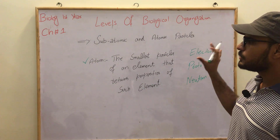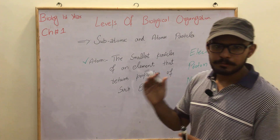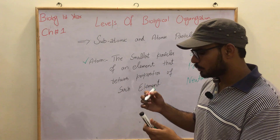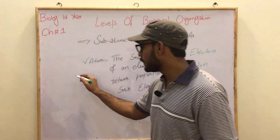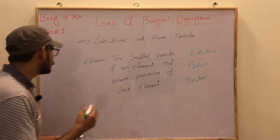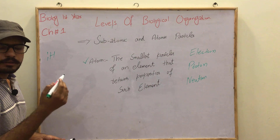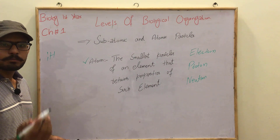If we talk about structure, let's take an example here. I'll give you a hydrogen example. What happens in hydrogen? In hydrogen, there is an electron and a proton.